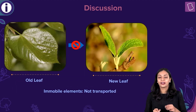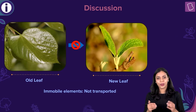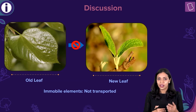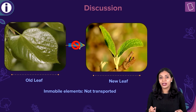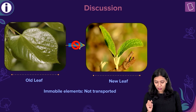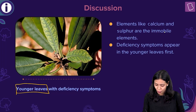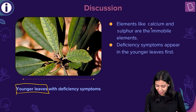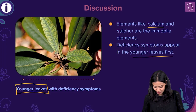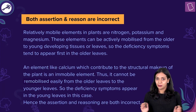What about immobile elements? Immobile elements like calcium cannot be mobilized within the plant because they are components of the structural framework. Since the old leaf cannot mobilize the deficient element to the new leaf, the deficiency symptoms will first be seen in younger leaves. Examples of immobile elements include calcium, and the deficiency symptoms appear in the younger leaves first. Therefore, in the question, both the assertion and reason statements are incorrect.